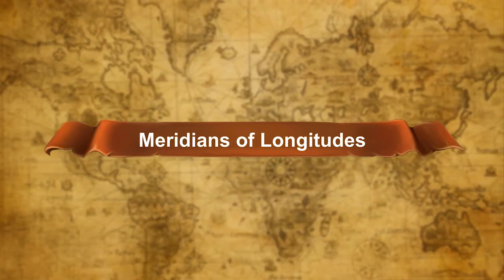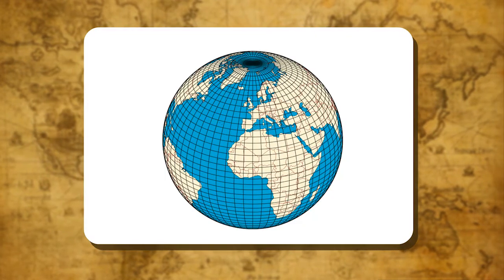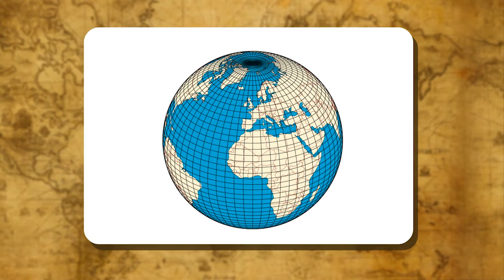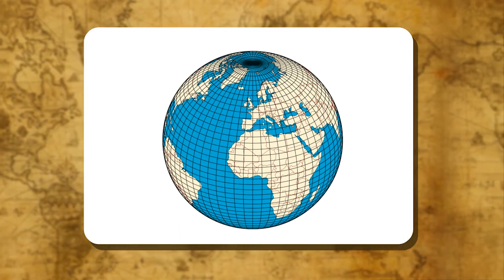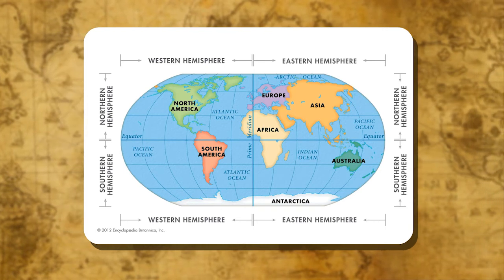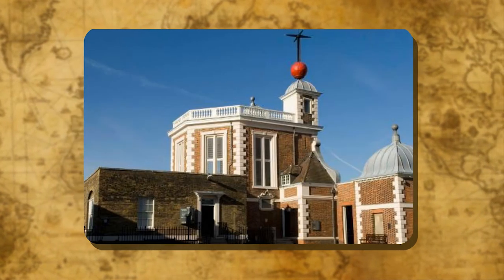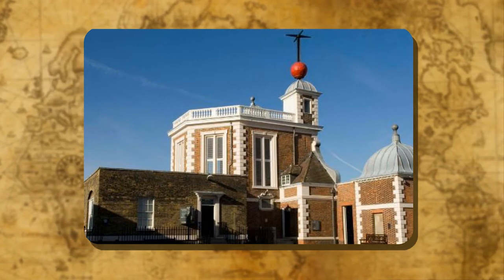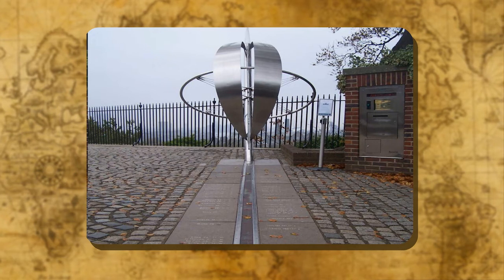Like the equator, an imaginary line also divides the Earth into the eastern and the western hemispheres. This line is called the Prime Meridian. The longitude passing through Greenwich Observatory near London has been selected as Prime Meridian. Its value is 0 degrees.